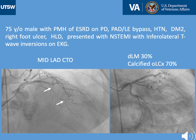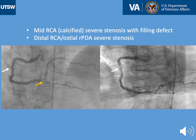His left angiogram showed mid-LAD CTO with left-to-left collateral, a distal left main lesion that did not seem to be critical, and significant calcified ostial circumflex disease. RCA angiogram showed severe stenosis in the mid-segment with a filling defect that could represent thrombus formation, as shown in the still images with the white arrow. There was also distal RCA ostial right PDA severe stenosis, indicated by the yellow arrow.